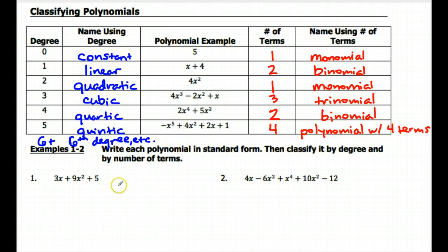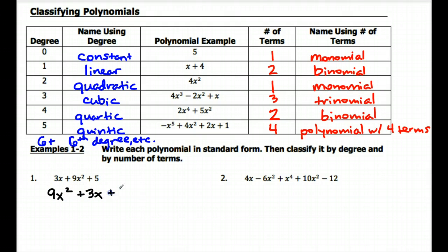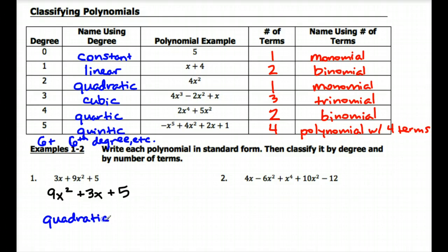Down here in examples one and two, we're going to practice using some of this vocabulary. The first thing we're going to do is write each polynomial in standard form. For number one, our largest exponent is a two, so we'll have nine x squared first, then plus three x, and then plus five. Then we classify it by degree and by number of terms. This is a degree two, so we're going to call this a quadratic. And there are three terms, so we'll say this is a quadratic trinomial.